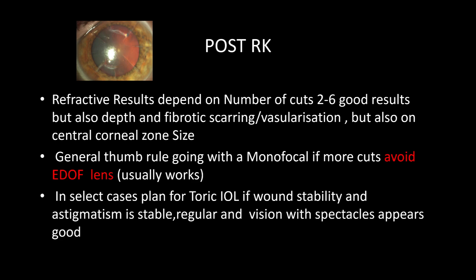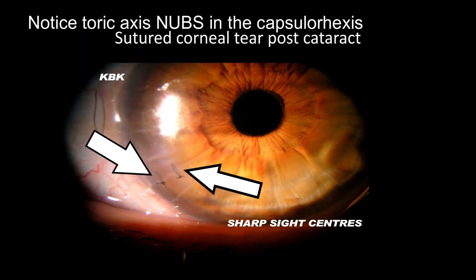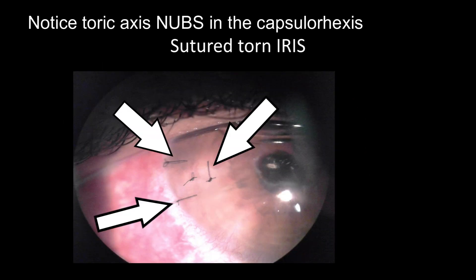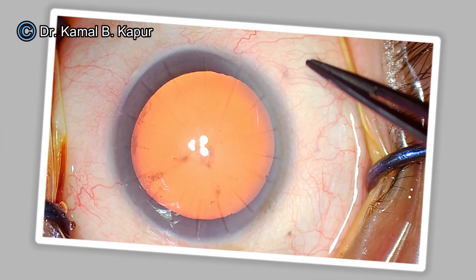You can take some patients for EDOF lenses, especially if the cuts are smaller in number — anything between four to six cuts, you may consider EDOF. Use of toric lenses is strongly recommended only when there is regular astigmatism. These are a few cases showing corneal gap post cataract surgery operated by other surgeons who did not follow standard set protocol.